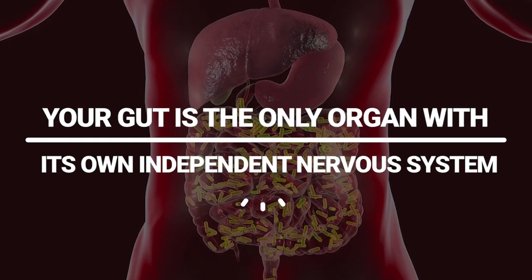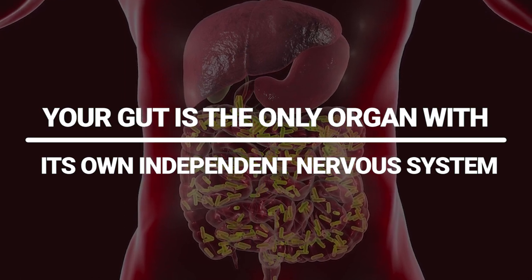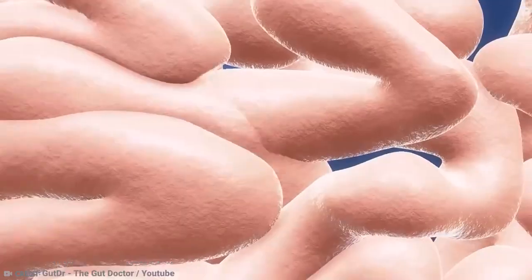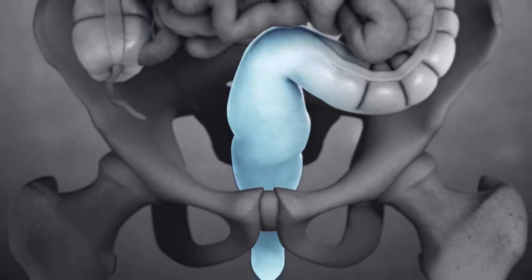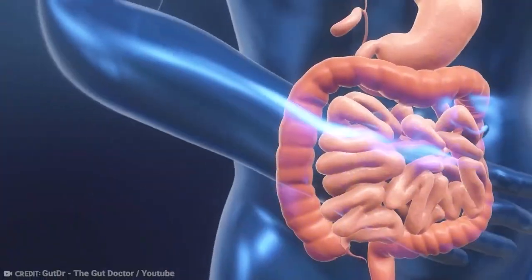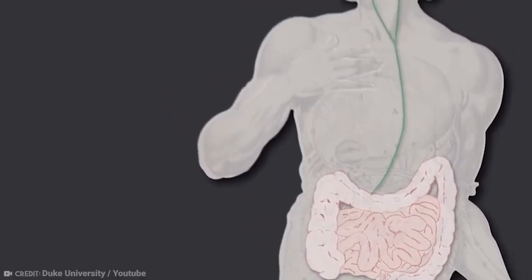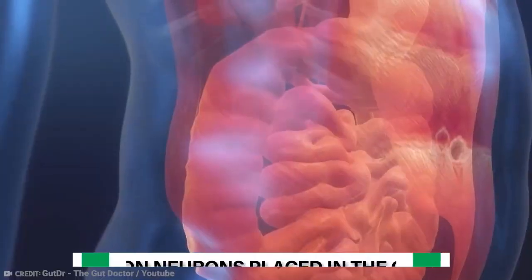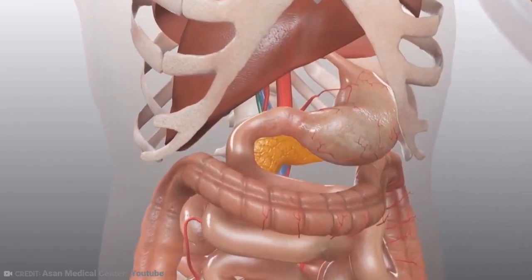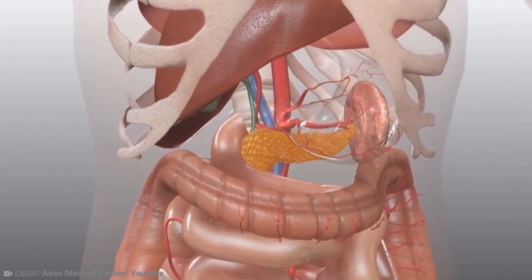Your gut is the only organ with its own independent nervous system. Your stomach, pancreas, liver, gallbladder, small intestine, colon and rectum are all parts of your gastrointestinal system, often known as your gut, which is frequently referred to as your second brain. With 100 million neurons placed in the gut wall, it is the only organ with a separate neural system that functions independently.